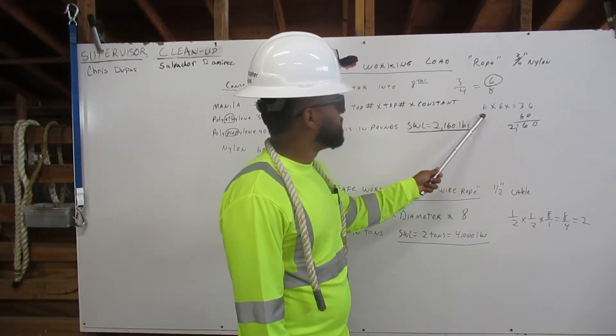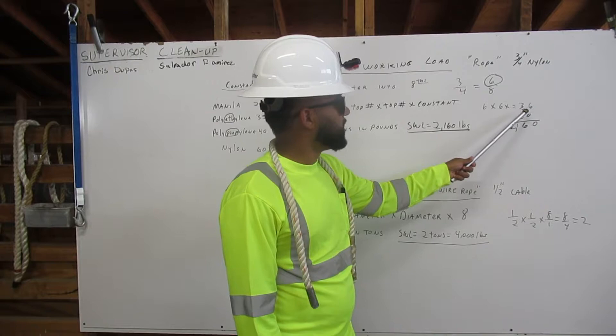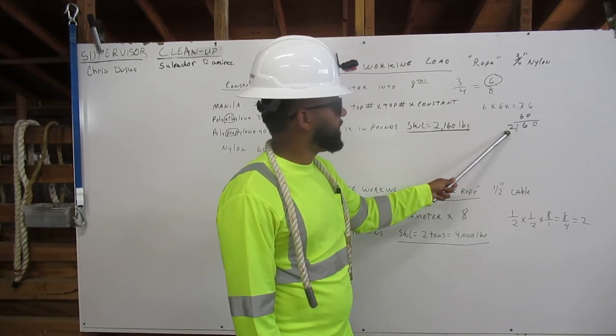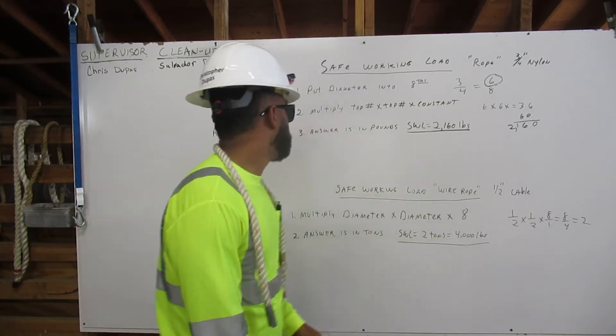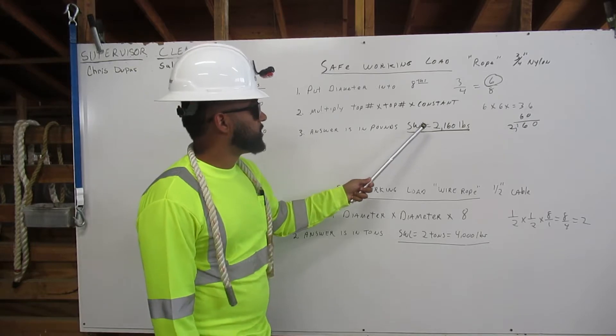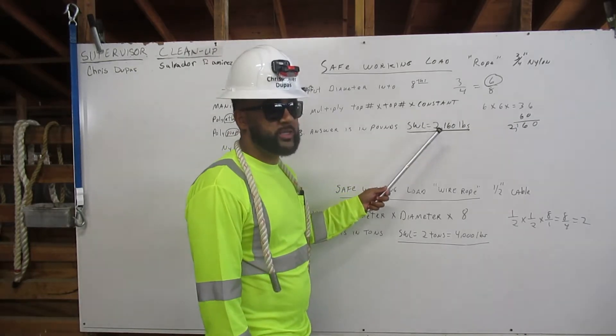Our top number is six. So we go six times six equals 36 times our constant, which is 60, equals 2,160. The answer is in tons. So our safe working load equals 2,160 pounds.